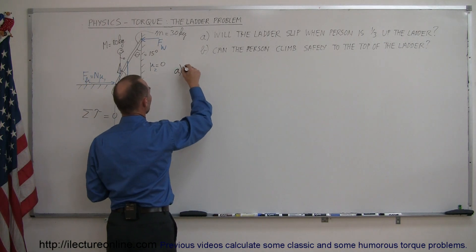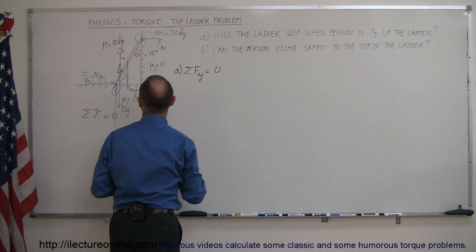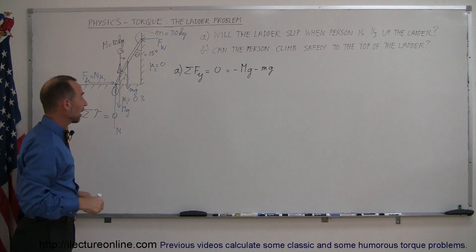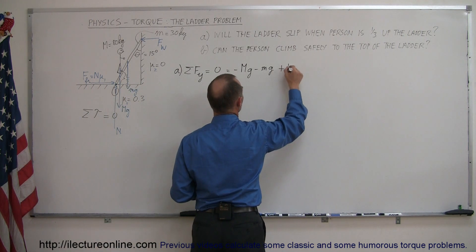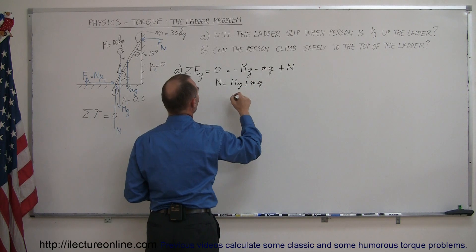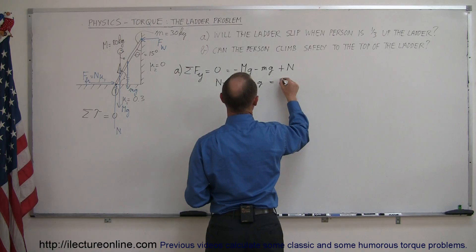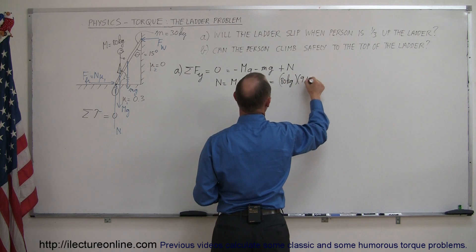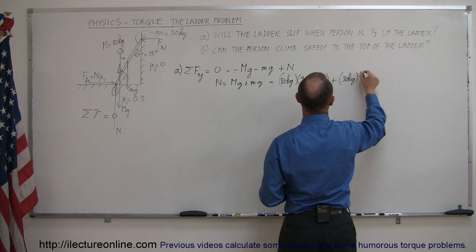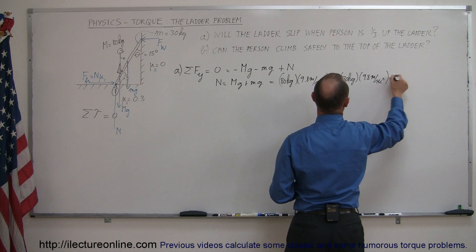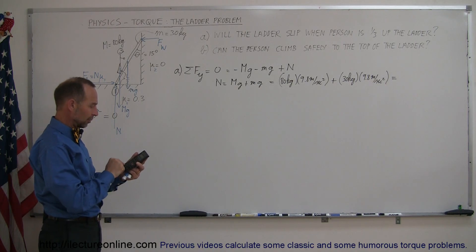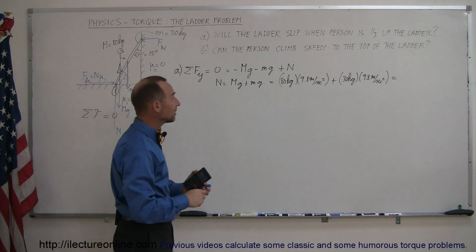For part A, the sum of the forces in the y direction must add up to zero. We have the two negative forces: minus Mg and minus little mg — the two forces caused by gravity acting downward — and then the normal force pushing upward. Rearranging, the normal force equals big Mg plus little mg, which is 80 kilograms times 9.8 m/s² plus 30 kilograms times 9.8 m/s², giving us a total of 110 times 9.8, which equals 1,078 Newtons.